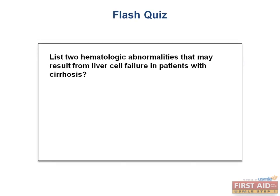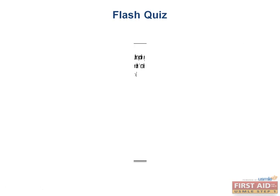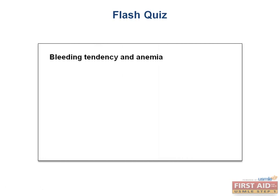Flash quiz: can you list two hematologic abnormalities that may result from liver cell failure in patients with cirrhosis? There's an increased bleeding tendency and anemia, due to the liver's inability to form the necessary clotting factors.